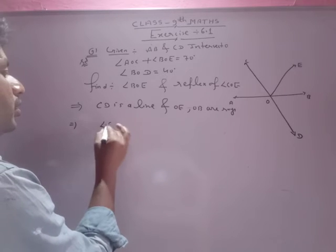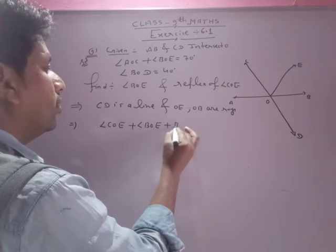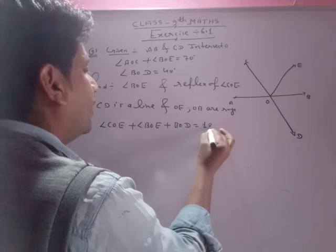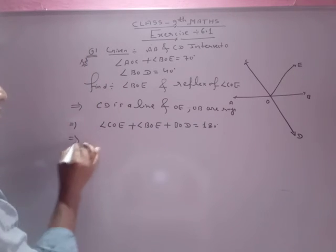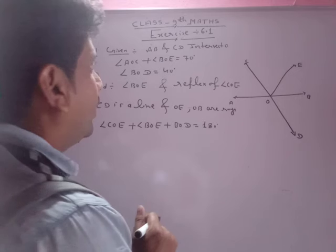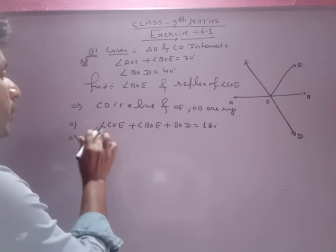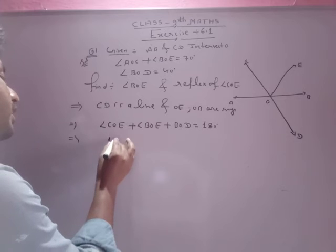then angle COE plus angle BOE plus angle BOD equals to 180 degree, और अभी हमने COE का value find किया था, तो यह COE का value हमें मिला था, कितना मिला था? Sir, COE का value हमें मिला था 110 degree.